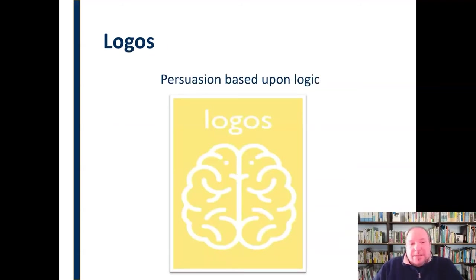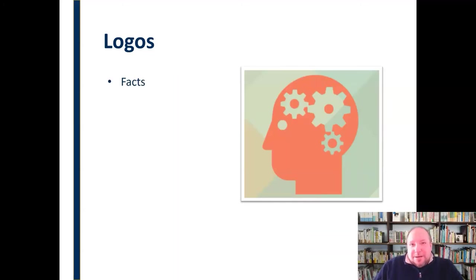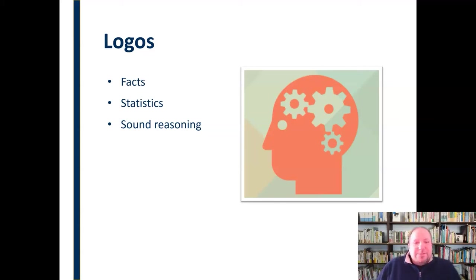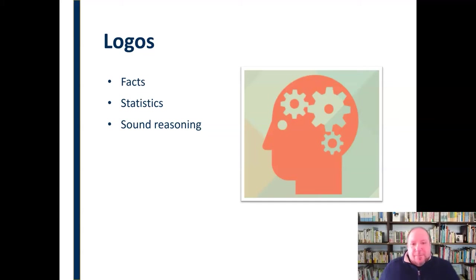And then we can use logos, which is based on logic. If pathos is tugging at our heartstrings, logos is working toward our mind — it's working on the audience's mind, trying to get them to think using logic and reason. When we think about logos, we think about things like using facts, using statistics, using sound reasoning. All of those things are incorporated into logos to demonstrate to the audience the importance and validity of the topic and our argument. Whereas logos is going to appeal to their minds and say, look, we are logical people — here are some statistics that back up what I'm saying, here are some facts we know to be true, and this is how they all connect through sound reasoning.